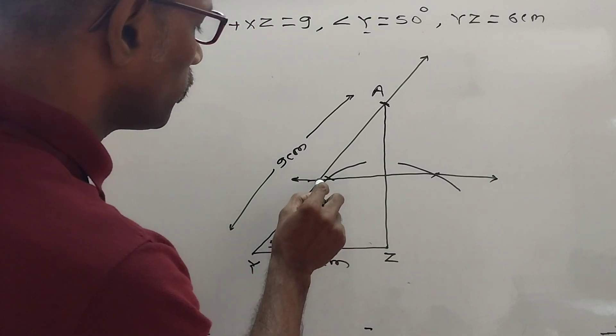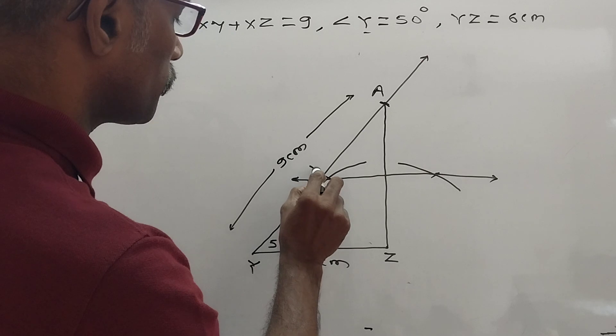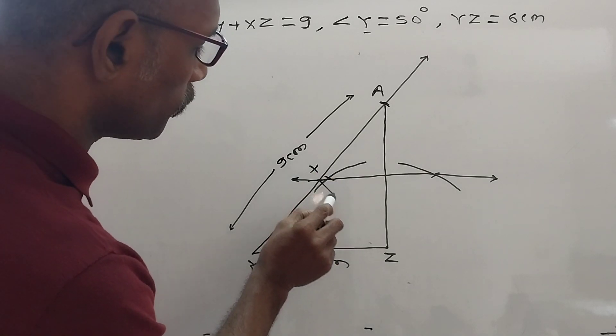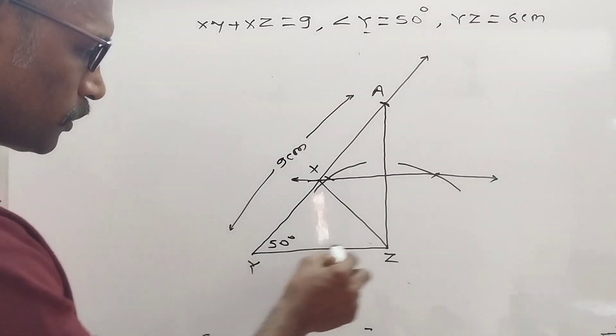Okay. Then this intersection is remaining point, which? X. Then join this. Did you understand? This is our original triangle.